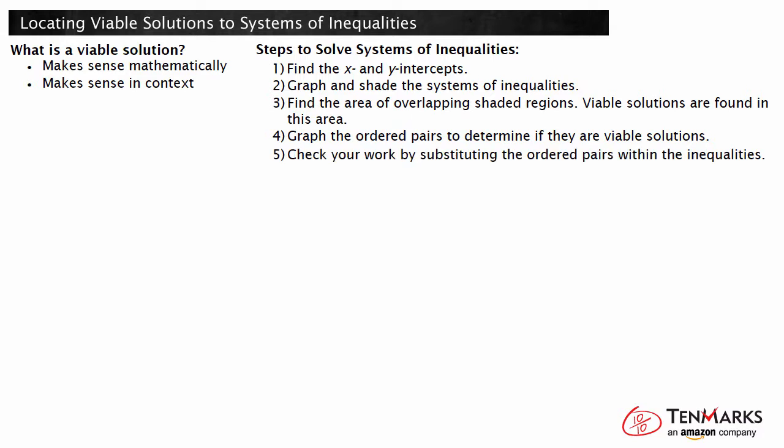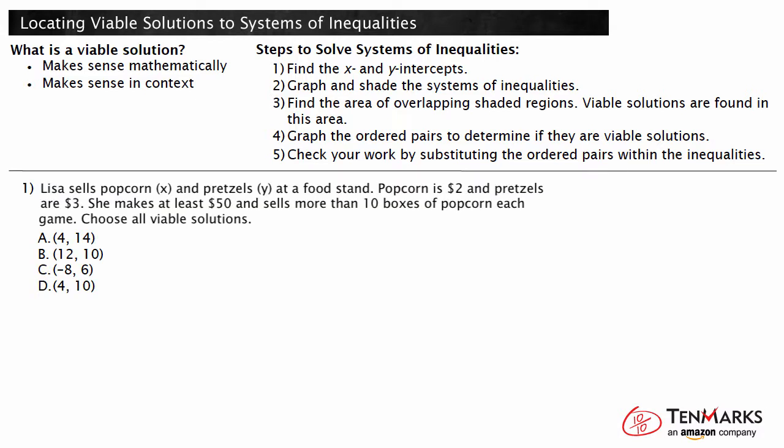Solutions can be checked by substituting the numbers from the ordered pair into the inequalities. Let's look at an example. Lisa sells popcorn x and pretzels y at a food stand. Popcorn is $2 and pretzels are $3. She makes at least $50 and sells more than 10 boxes of popcorn each game. Choose all viable solutions.